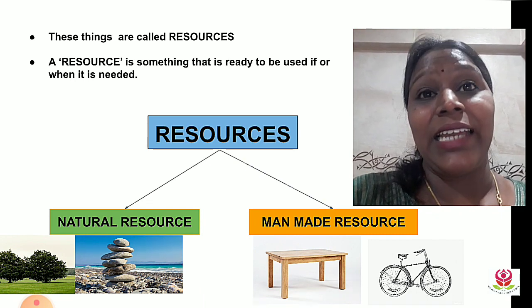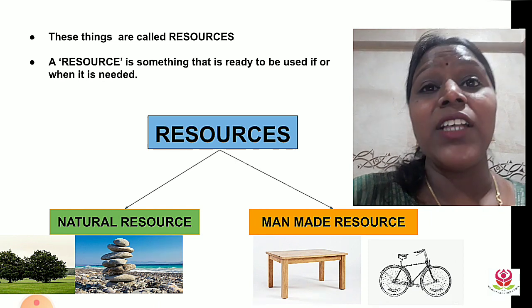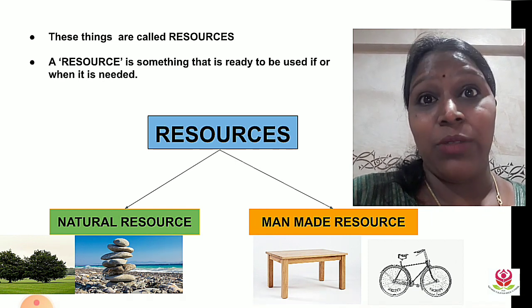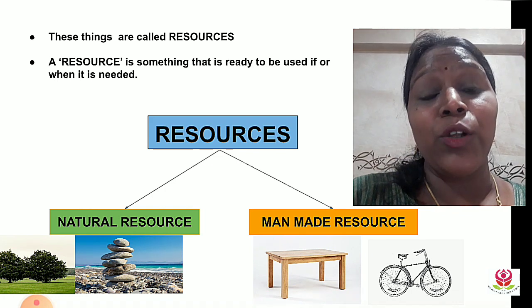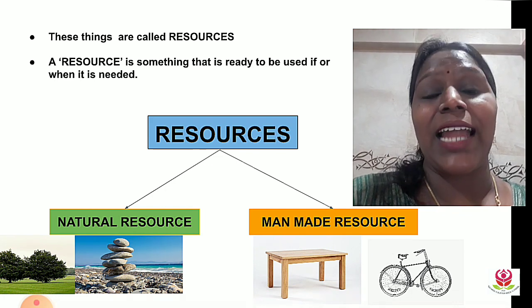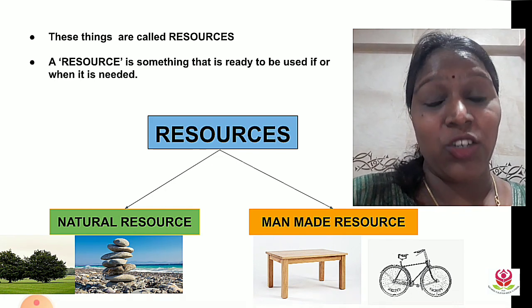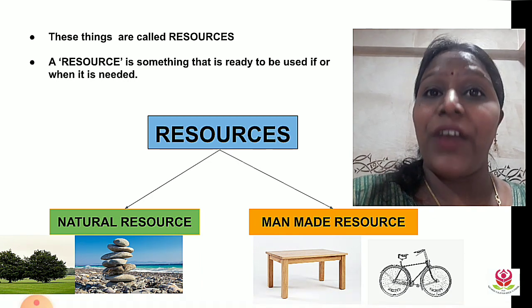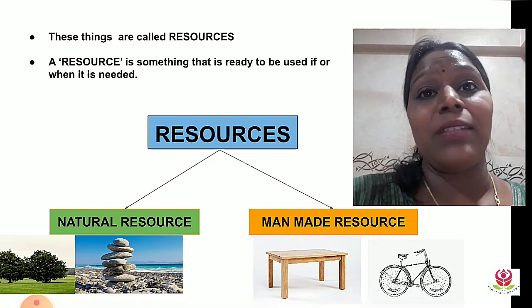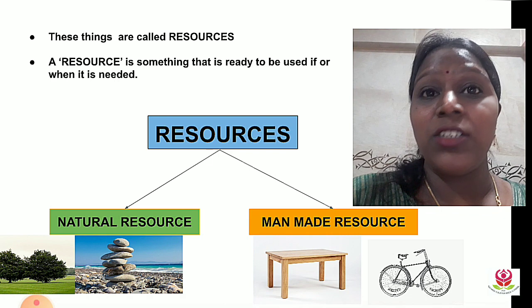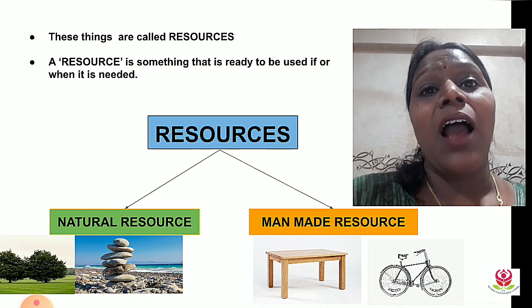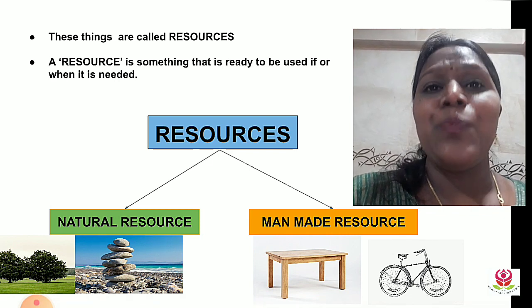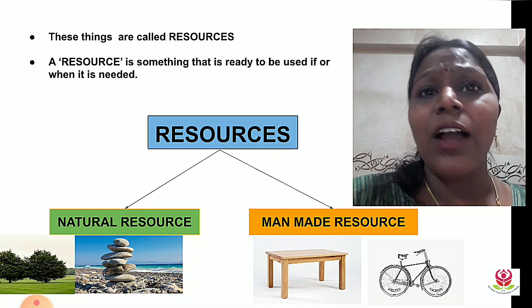Man-made resources are those resources that man uses the things he gets from nature for his utility. For example, the table — he uses the wood that comes from the tree, which is from nature, and makes furniture. He uses metal, which is a natural resource, to make other objects.